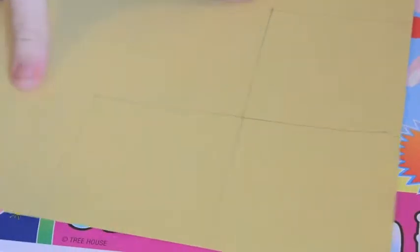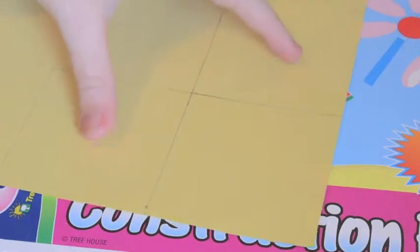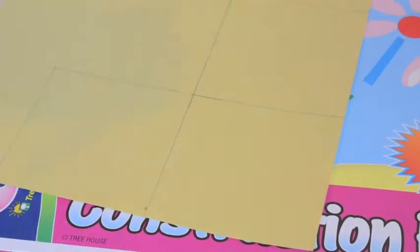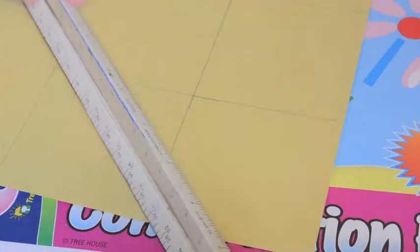Hopefully you ended up with something that looks like this. Now what you're going to do is in the middle of the two boxes on each side that I'm pointing at right now, you're going to make a diagonal line straight through the middle.